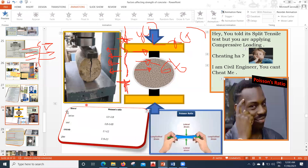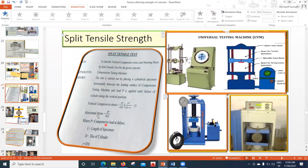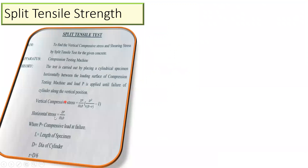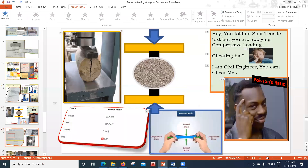The formula for horizontal tensile stress is: σt = 2P / (π × L × D). The horizontal stress — which is the split tensile stress — is given by 2P upon π L D. Where P is the compressive load at failure, D is the diameter of the cylinder which is 150 mm, and L is the length of the specimen which is 300 mm. If you calculate this you will get how much tensile stress has been generated in your cylinder.